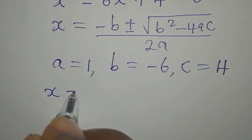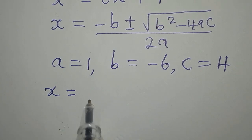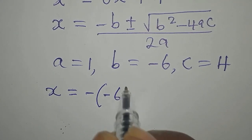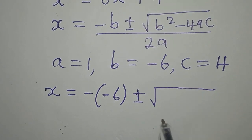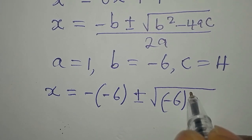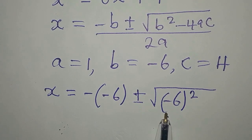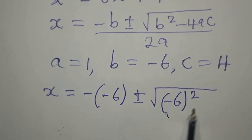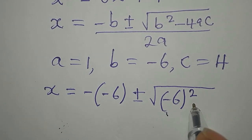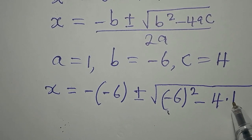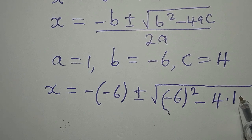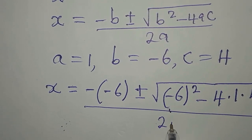Substituting into the formula: x equals negative negative 6, plus or minus the square root of negative 6 squared — and we must put negative 6 in brackets, because minus 6 squared is different without the bracket — minus 4 times a, which is 1, times c, which is 4. All of this divided by 2 times 1.